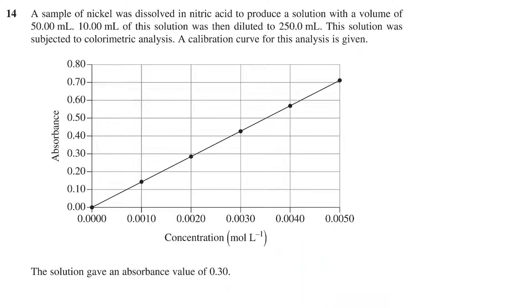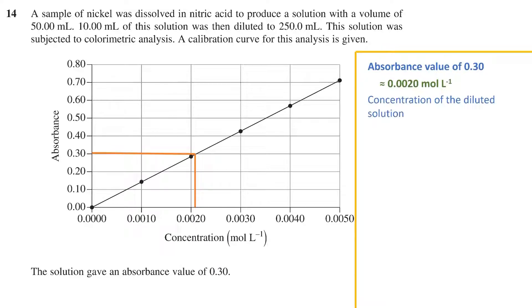To answer this question, we use the absorbance value of 0.30 together with the calibration curve to determine the concentration. We can see the absorbance of 0.30 meets the line at just beyond 0.002 moles per liter, so let's use 0.002 moles per liter as our figure for the concentration. We need to remember that this is the concentration of the diluted solution.